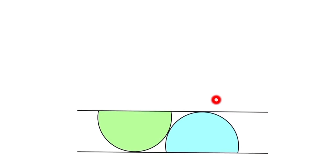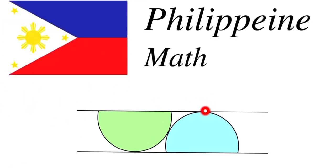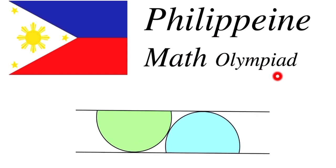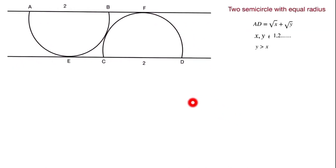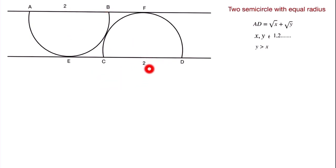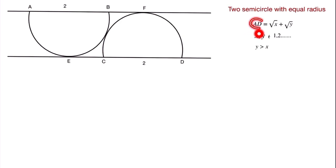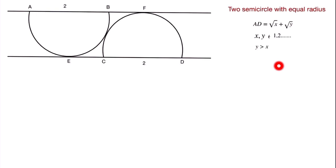Welcome back. In this video we are going to solve a question taken from the Philippine Math Olympiad. Can you solve this question? If you can, pause the video and give it a try. The problem has two semicircles with equal radius r = 1, where the length of AB is 2 and the length of CD is 2. We have to find AD in the form √x + √y, where x and y are natural numbers and y is greater than x.